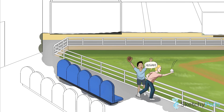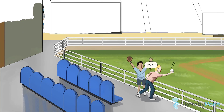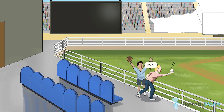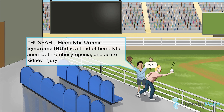HUS consists of a classic triad of hemolytic anemia, thrombocytopenia, and acute kidney injury. The name already tells you two of the three, so now you just need to remember that platelets are also involved. Let's look more closely at each one of these three components.